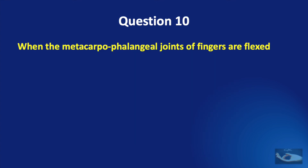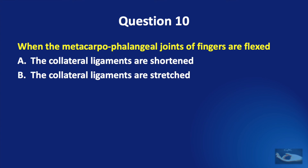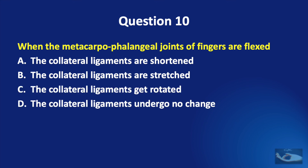Question number ten. When the metacarpophalangeal joints of fingers are flexed: the collateral ligaments are shortened, the collateral ligaments are stretched, the collateral ligaments get rotated, or the collateral ligaments undergo no change?